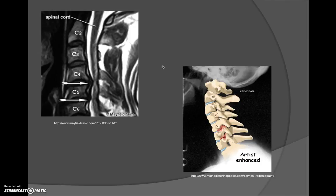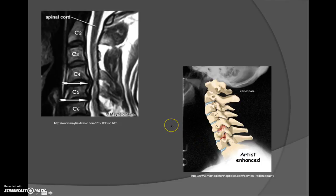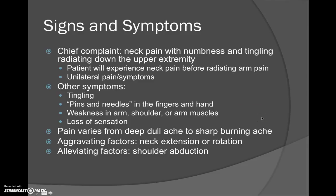These images demonstrate cervical radiculopathy. The MRI shows intervertebral disc herniation at C4-C5 and C5-C6, which can create radiating symptoms down the arm. The artist-enhanced X-ray of the cervical spine demonstrates narrowing of the foramen, which would create pain along those nerve distributions.